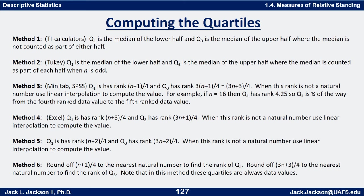Method six takes (n+1)/4 and rounds to the nearest natural number to find the rank of Q1, and takes (3n+3)/4 rounded to the nearest natural number for Q3 — so in method six the quartiles are always data values. In method five the quartiles are always either a data value or halfway between two data values. Methods three and four allow values one-fourth, halfway, or three-fourths of the way between two data values. Methods one and two yield either a data value or halfway between two. Each method has its advantages, and no general consensus has been reached.